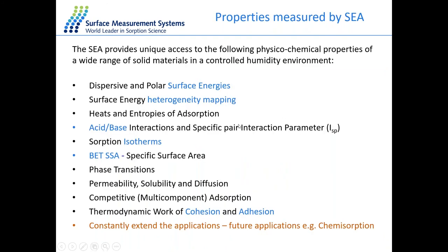The properties measurable with IGC include different components of surface energy using polar and non-polar molecules, as well as surface energy heterogeneity mapping. We can calculate acid-base properties using polar molecules, giving Ka and Kb values. With organic vapors we can determine sorption isotherms and BET surface area of the solid material. From the surface energy, we can also calculate the work of cohesion and adhesion — important in formulation development for determining affinity between materials or how a sample will blend with other components.